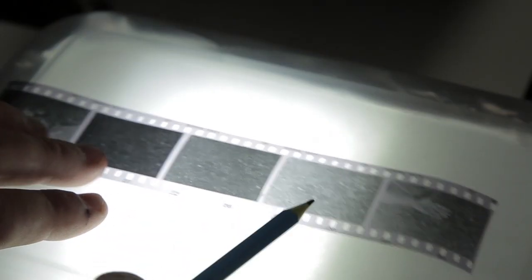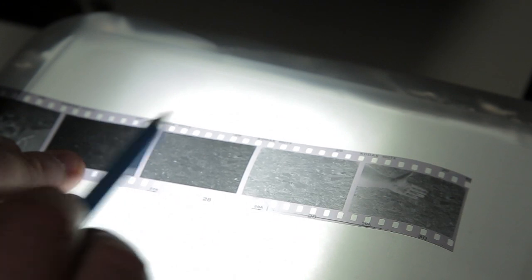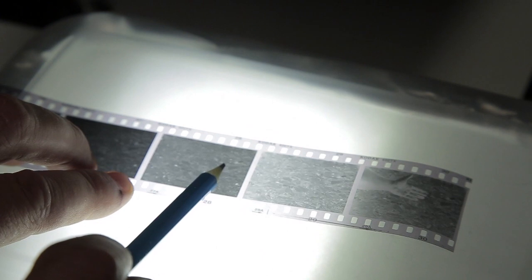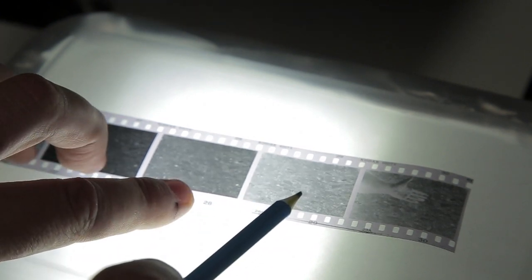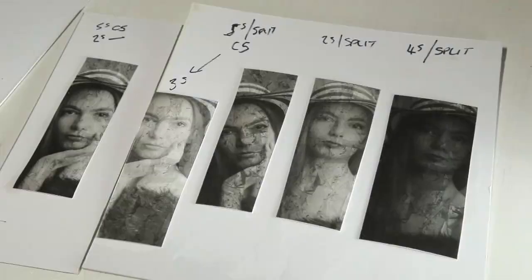So these are the three negatives that I developed. You can see this was the overexposed one. This was the correct meter reading shot and this one was the underexposed one. I decided to go with the underexposed one because that provided me better results.